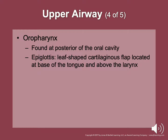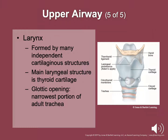The oral pharynx is found as part of the throat, in the posterior of the oral cavity. The epiglottis is the leaf-shaped cartilage located at the base of the tongue and above the larynx. It keeps foreign bodies out of the trachea and opens for the GI tract. The larynx is formed by many independent cartilage structures, including the thyroid cartilage. The glottic opening is the narrowest portion of the adult trachea.